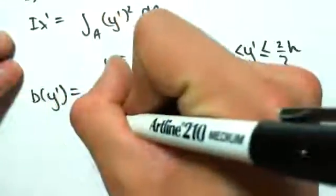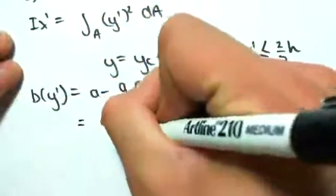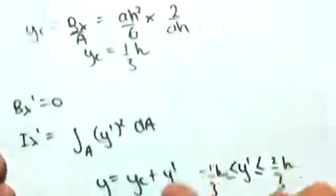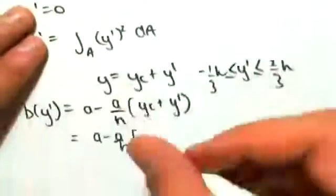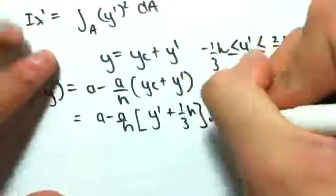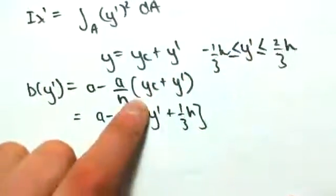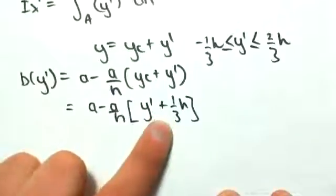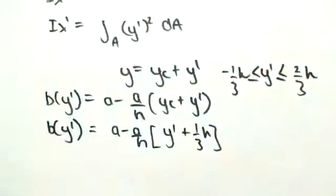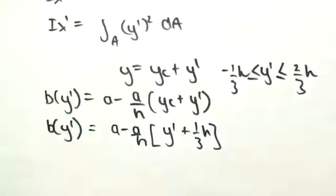Now, we can simplify this to a minus a on h, yc was 1/3 of h, so this is the same as y dash plus 1/3 of h. I've just swapped around those two, so I've subbed in for yc, which is 1/3 of h. So we now have a function b(y dash). So we're going to use that to solve ix dash.